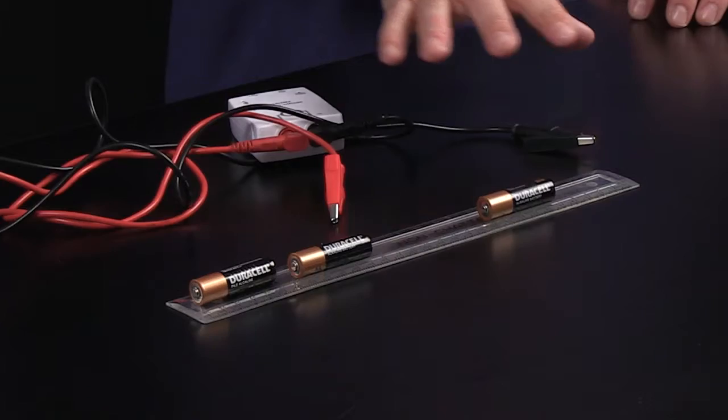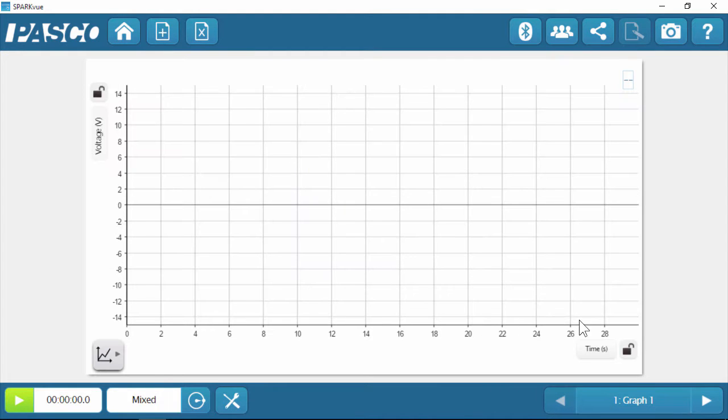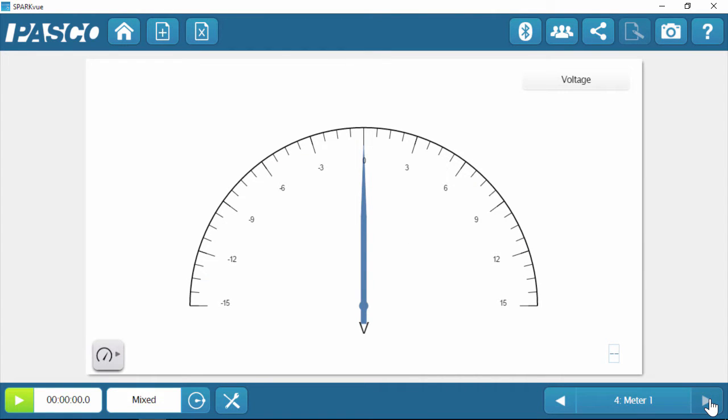And to do this particular experiment, we're going to look at batteries and batteries in a series. I'm going to use a meter display. So I'm going to touch on voltage, and I'm going to go through my graph display, my digits, my table, and I get to a meter display.